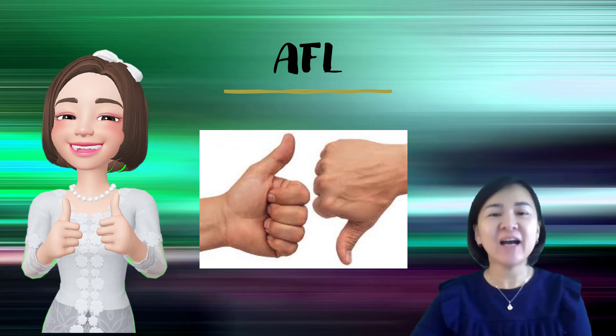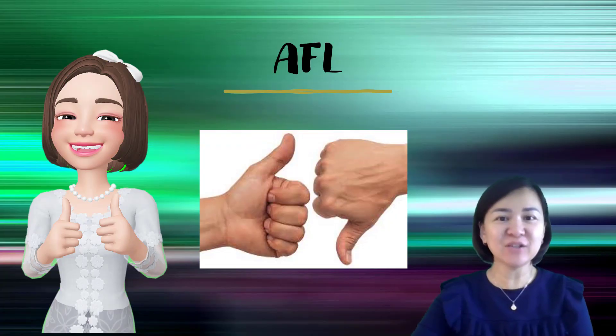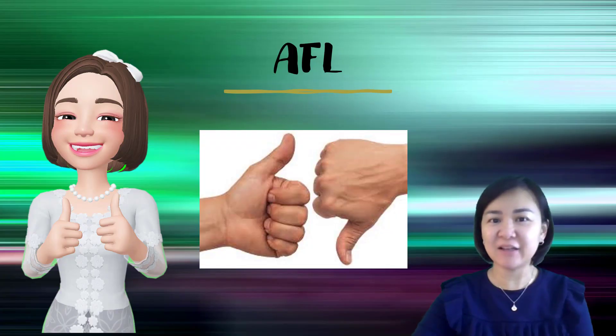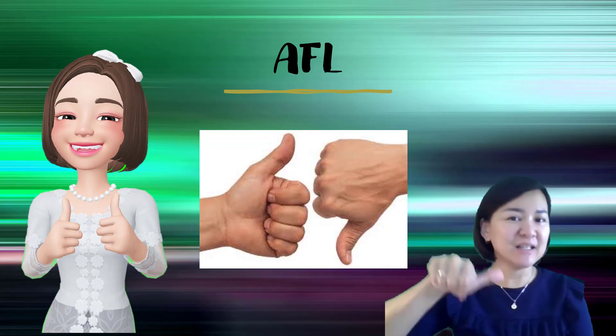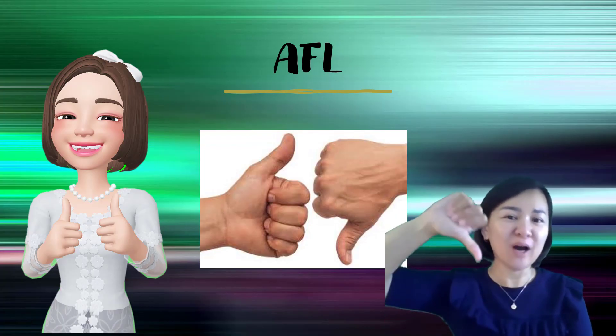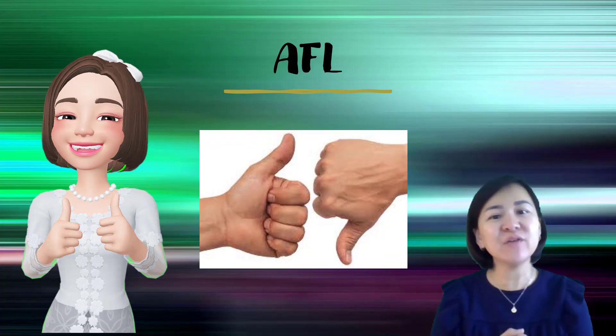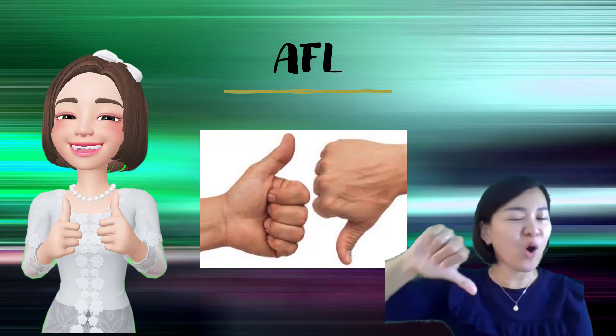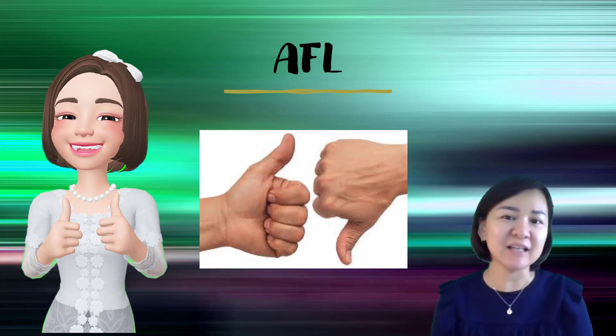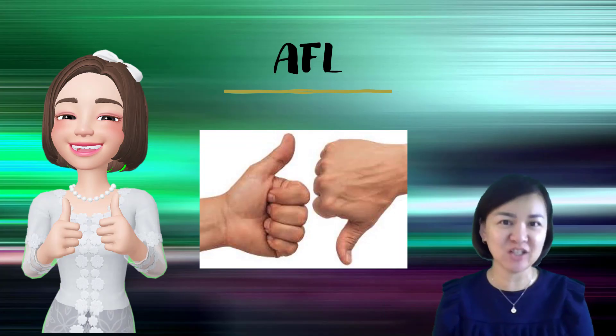Okay, the next one is AFL. So, what is AFL? AFL is assess for learning. Okay, assess yourself whether you can understand the content that I delivered just now. If you understand, thumbs up. This is so-so, while the thumbs down is completely not understand. Okay, so rate yourself whether you understand, so-so, or not understand the content that I delivered just now.